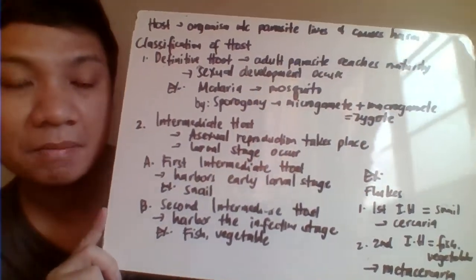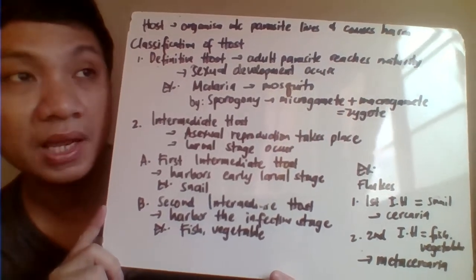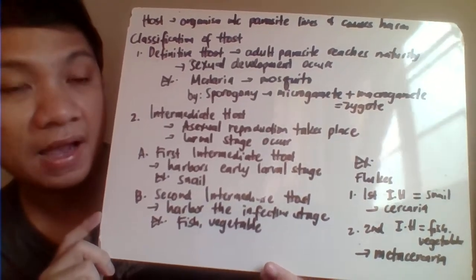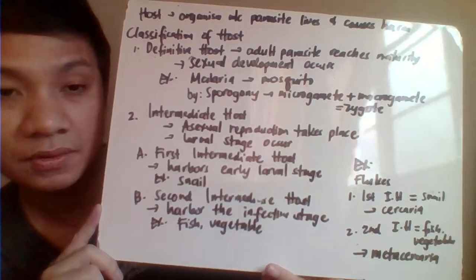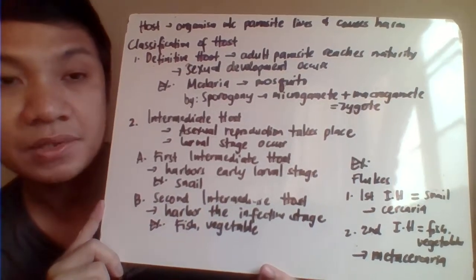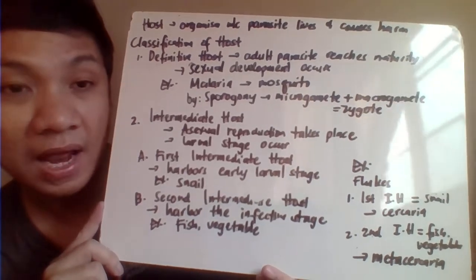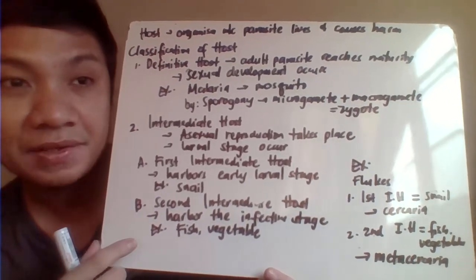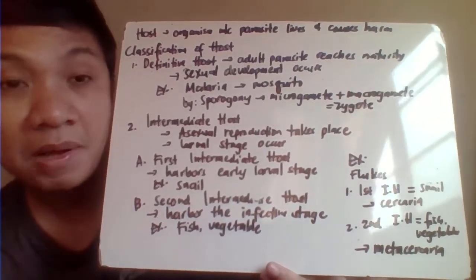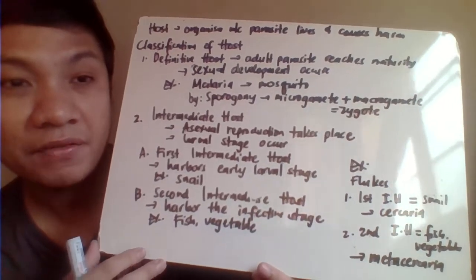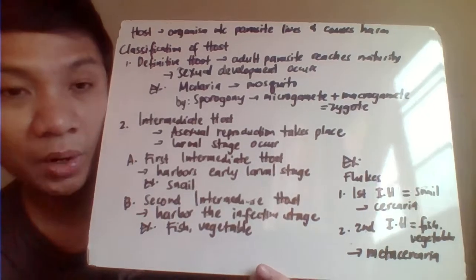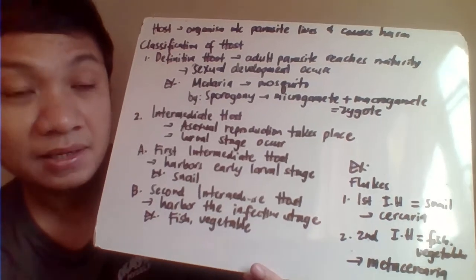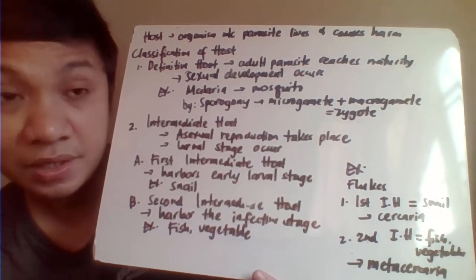The host is the organism on which the parasite depends to survive. The definitive host is where the parasite undergoes sexual reproduction. For example, in nematodes, a male adult worm and female adult worm copulate, and the female lays eggs — that constitutes sexual reproduction. Therefore, that organism is considered the definitive host. Humans commonly serve as definitive hosts for helminths and nematodes.